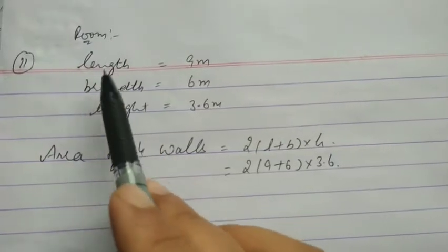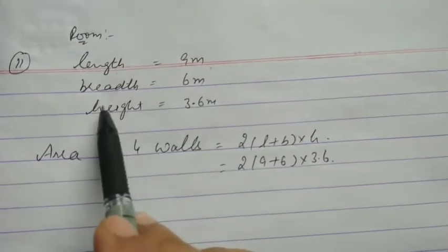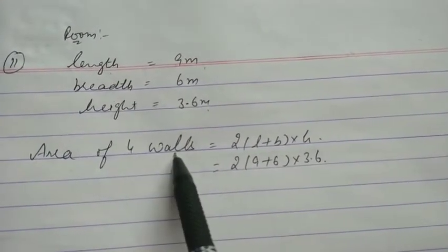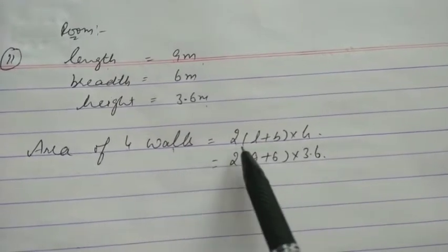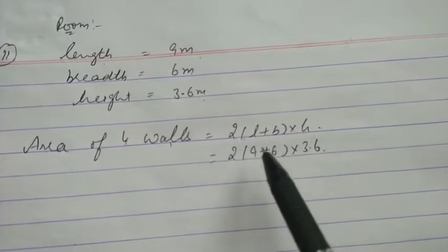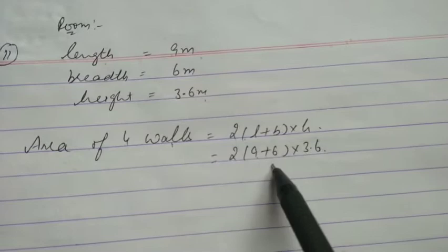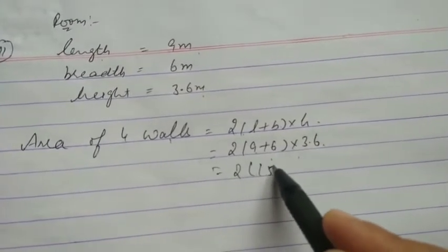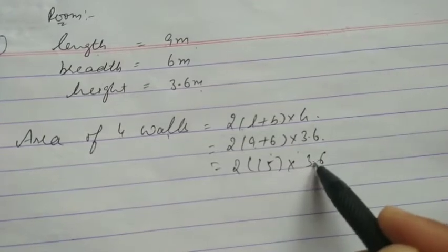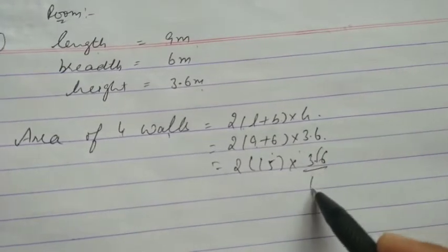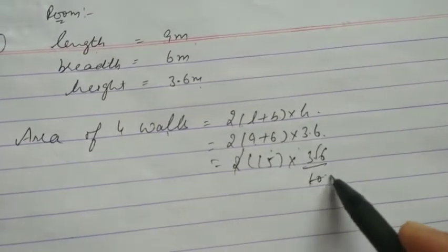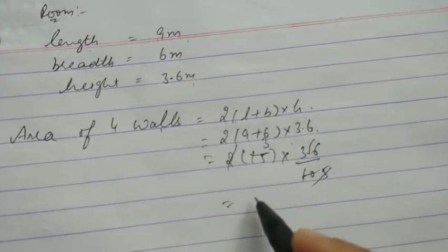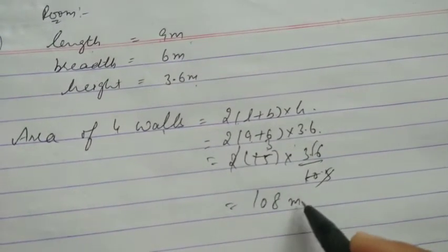The dimensions of the room are: length 9 meter, breadth 6 meter, and height 3.6 meter. First, find the area of four walls. The formula of area of four walls is 2 times (L + B) into height. Length is 9, breadth is 6, height is 3.6. So 9 plus 6 is 15, into 3.6, into 2 equals 108 meter square.